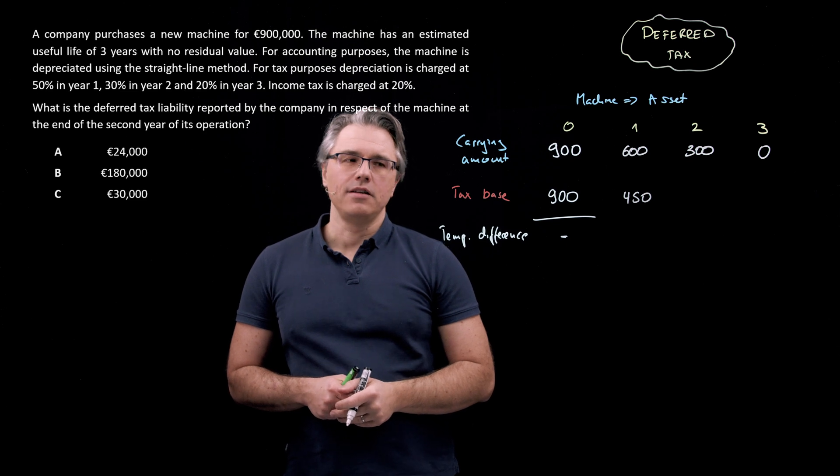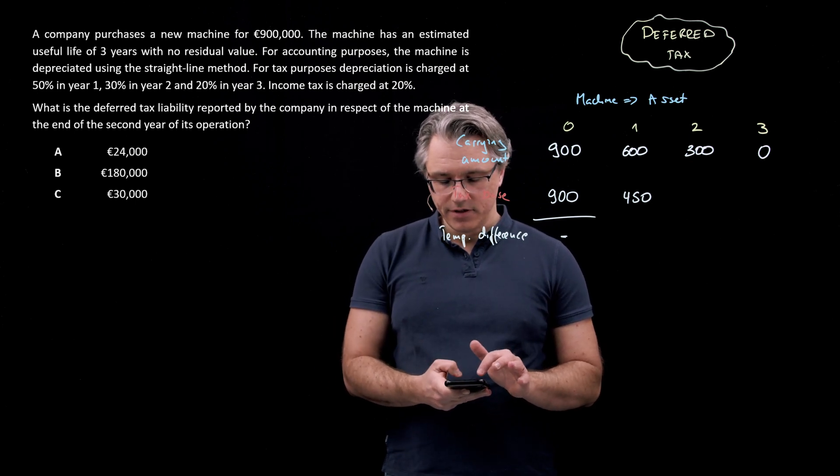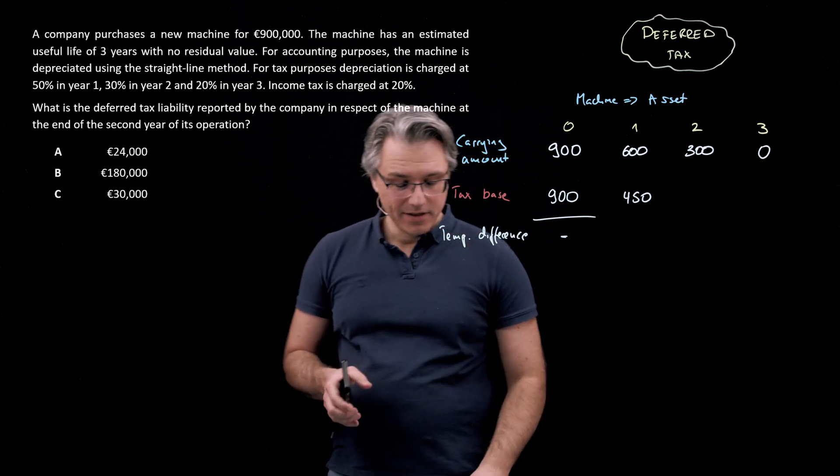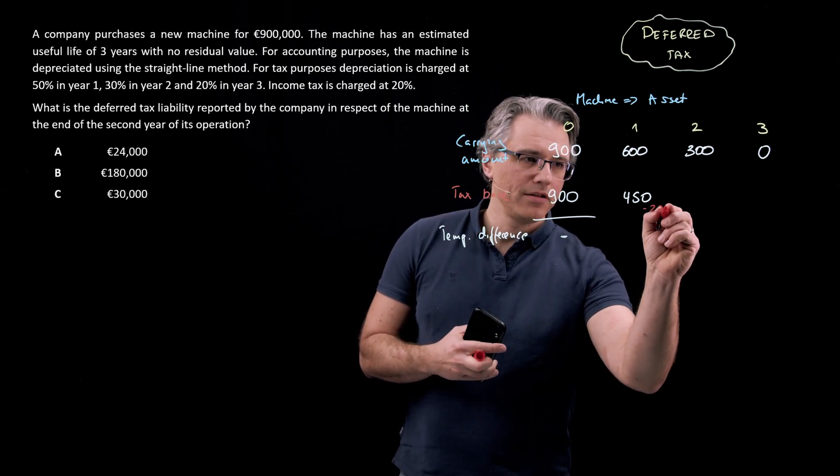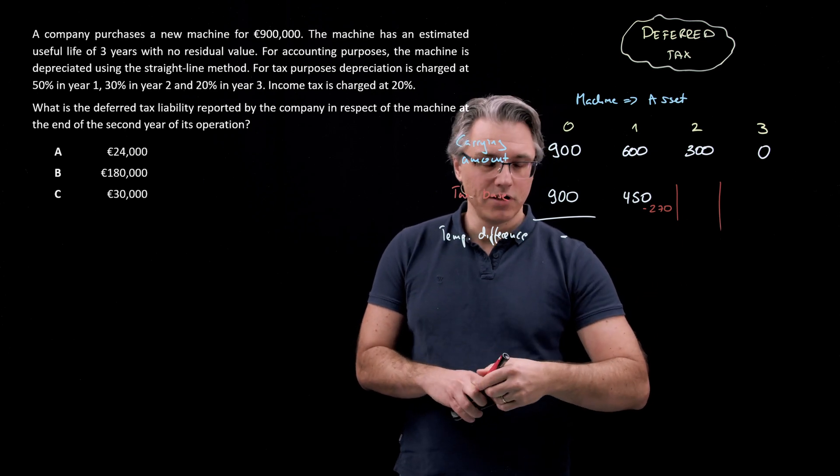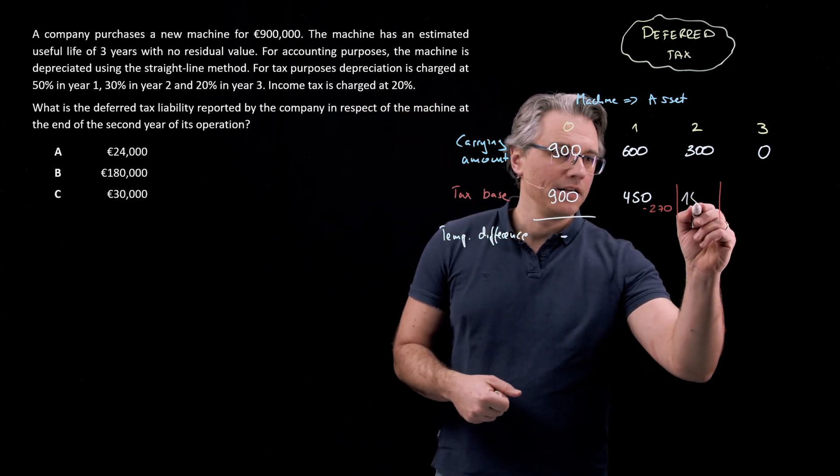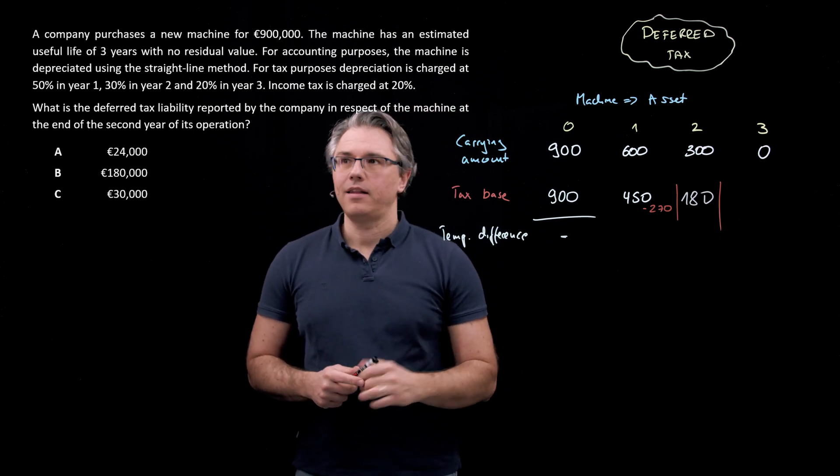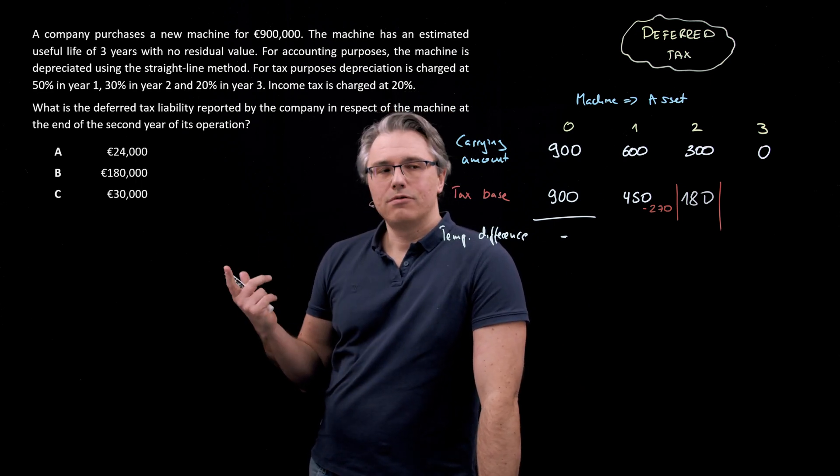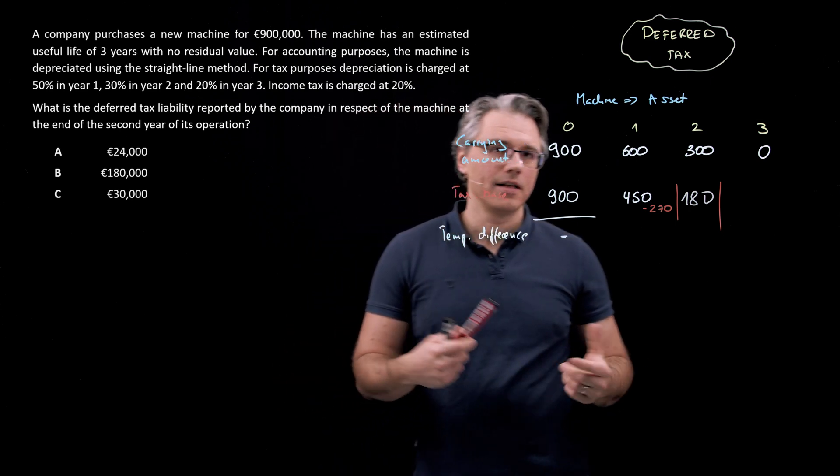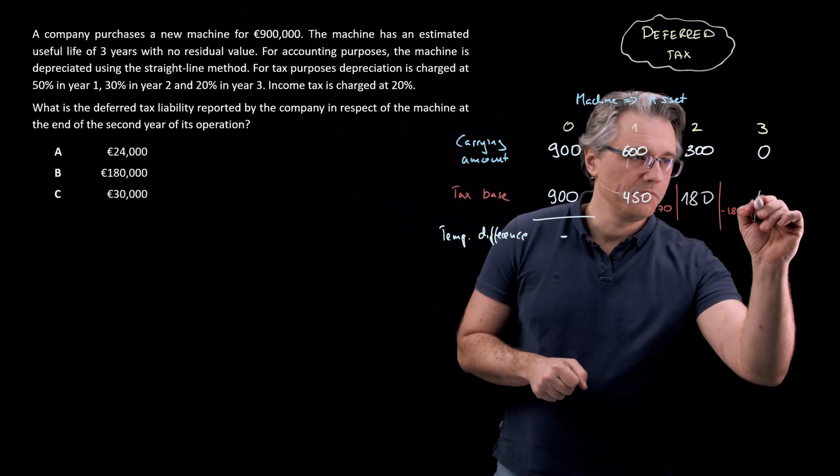These three percentages add up to 100%, so they must all apply to the original initial value. So by the end of year one, we're going to have 50% depreciation down to 450,000, the tax base. And then 30% in year two. If you compute 30% of 900,000, that's going to give a deduction of 270, which will create a new carrying amount of 180,000. And then the next reduction is going to be 20% of the original amount, 180,000. Which means our asset for tax purposes will also be depreciated down to zero.